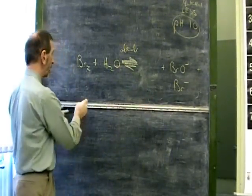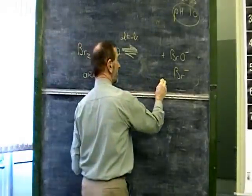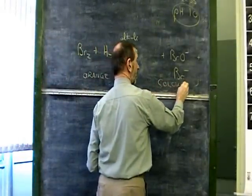You would see a color change, by the way, because bromine water is orange in appearance, whereas the substances on the right-hand side are colorless.